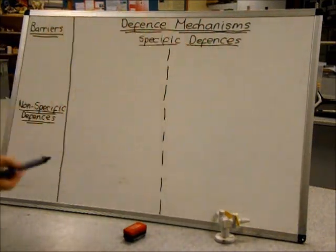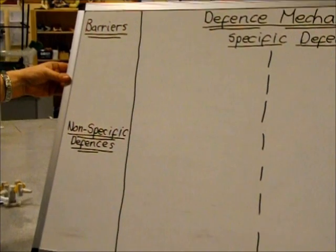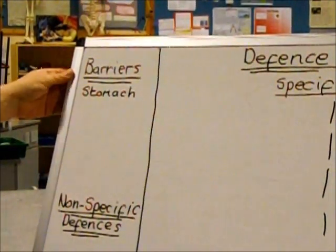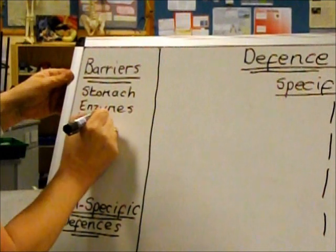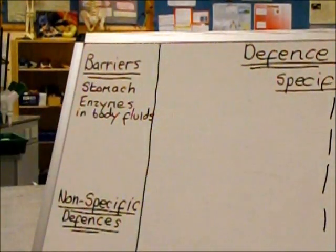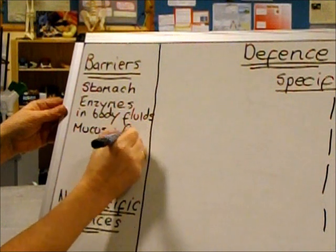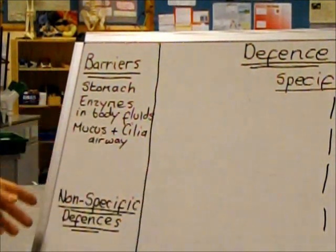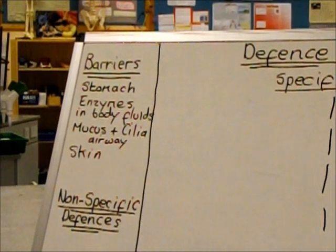There are a number of barriers to prevent pathogens from entering the body. These include stomach acid to kill pathogens in food, enzymes in body fluids — the classic one is called lysozyme — which actually burst bacterial cells. Mucus and cilia in the airways trap dust and pathogens and move them out of the lungs, and the skin is a barrier which is impermeable to most pathogens.